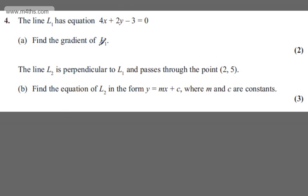I'm going to rearrange this into the form y = mx + c. Subtracting 4x from both sides and adding 3, we have 2y = -4x + 3. Dividing both sides by 2, we get y = -2x + 3/2. From this, the value of m is -2. So the gradient of this line is -2.